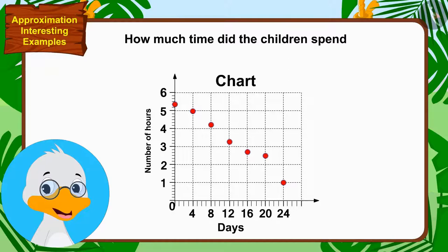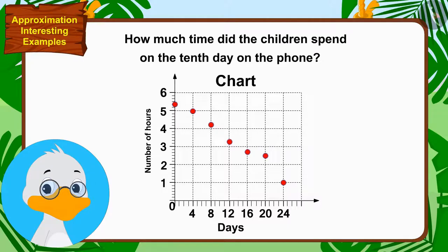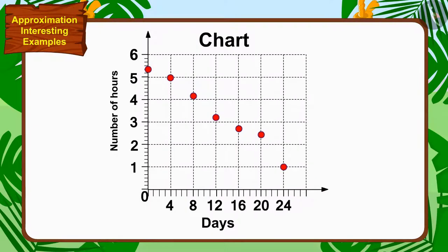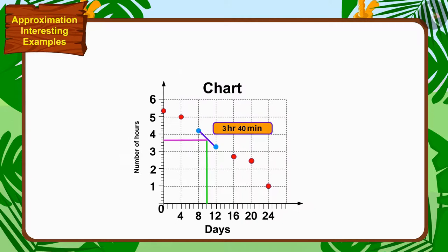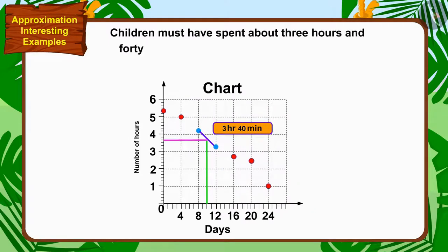There is a cut of 1 hour and 30 minutes. Approximately, how much time did the children spend on the 10th day on the phone? Can you find an answer, children? We can find a solution by connecting the dots of the 8th and 12th days in a straight line. The vertical line on the 10th day meets this line at a dot indicating about 3 hours and 40 minutes. So, the children must have spent about 3 hours and 40 minutes on the 10th day on the phone.